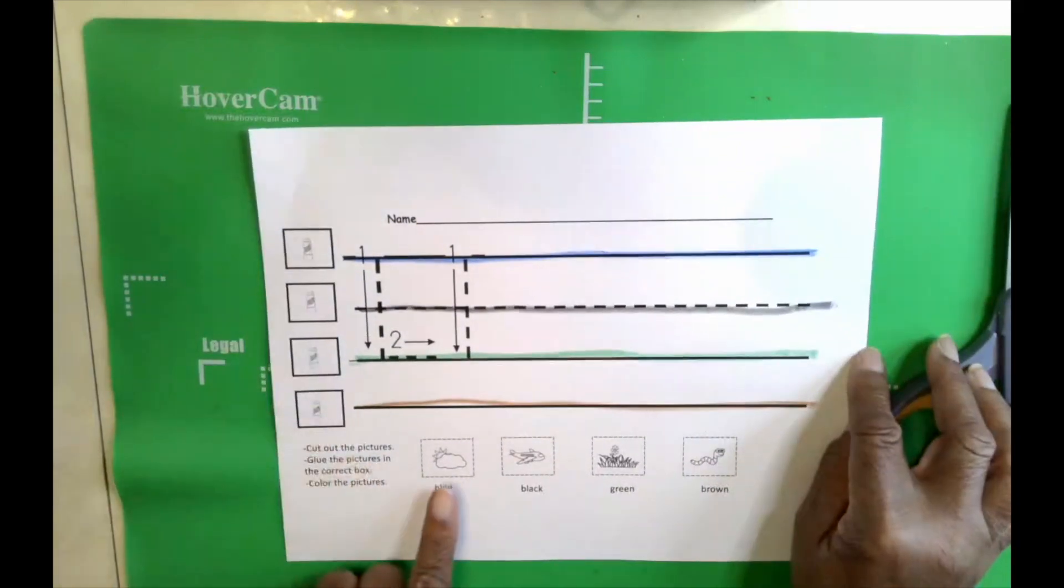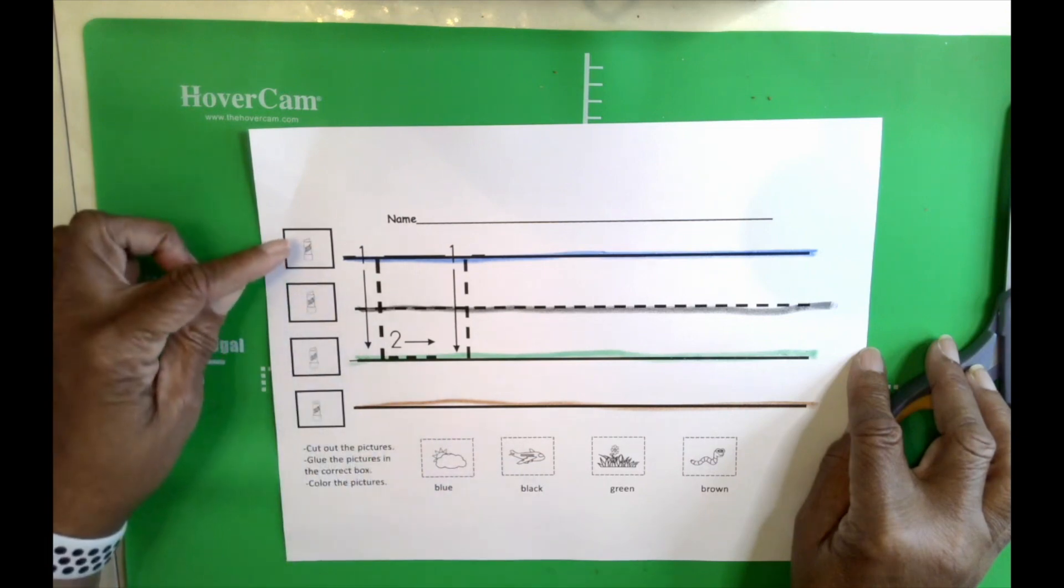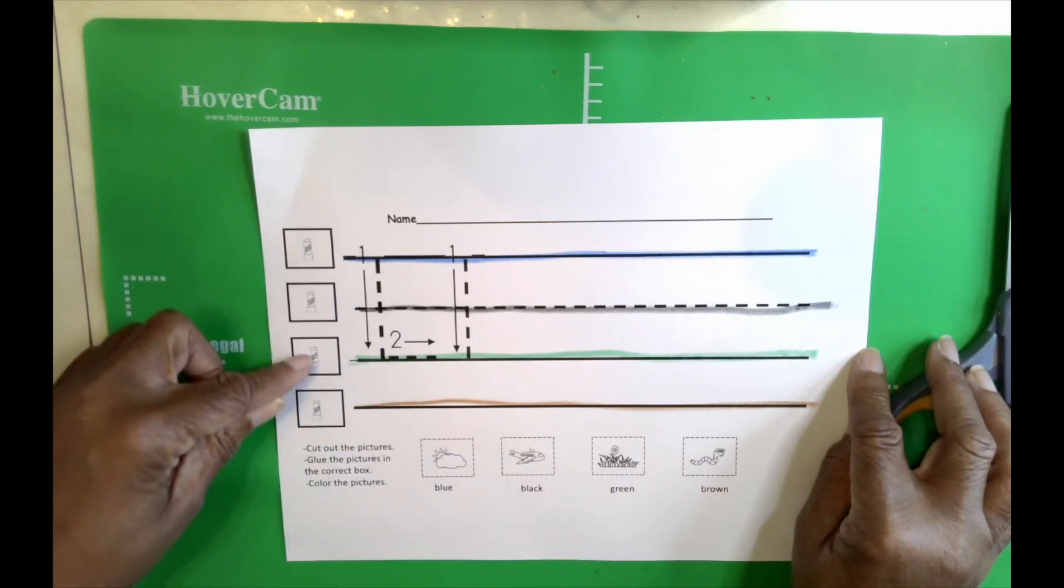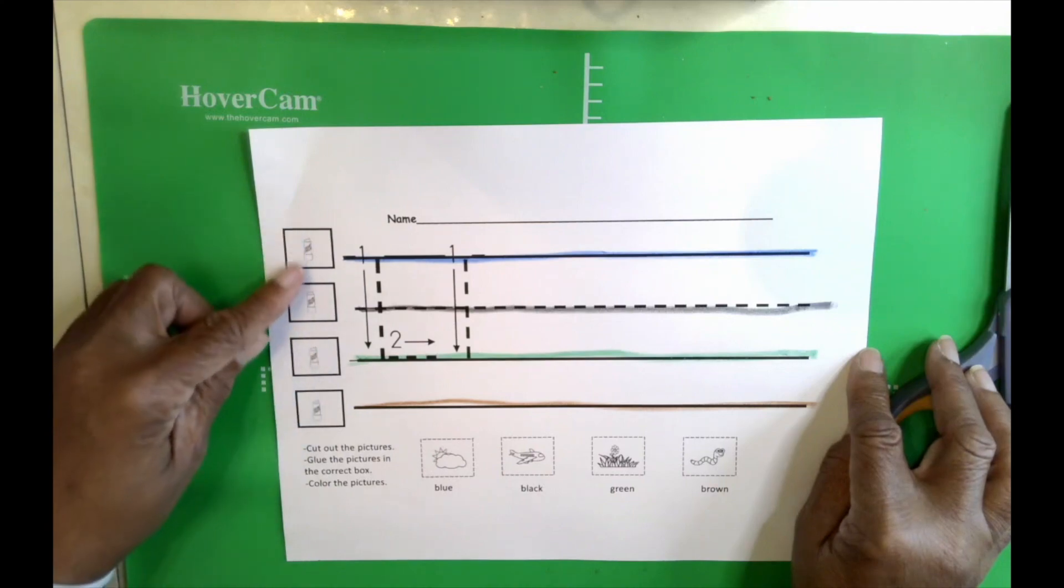We have our skyline, our plane line, our grass line picture, and our worm line picture. We're going to cut the pictures out. We're going to glue them next to the line that represents the picture.